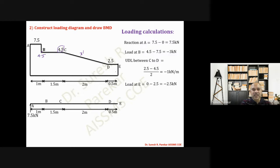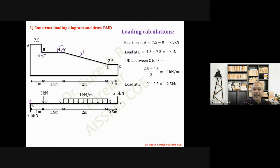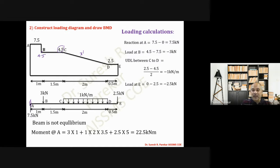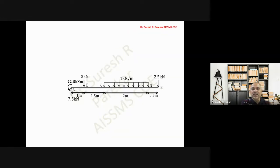Now we plot the loading diagram with distances: reaction at A = 7.5 kN, load at B = 3 kN, UDL between C to D = 1 kN/m, and load at E = 2.5 kN downward. From the diagram we can identify this as a cantilever beam with a fixed end. Taking moments, we get moment at A = 22.5 kN·m clockwise, so the fixed-end moment must be anti-clockwise = 22.5 kN·m.